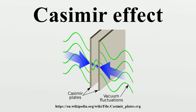In fact, Casimir's original goal was to compute the van der Waals force between polarizable molecules of the conductive plates, and thus it can be interpreted without any reference to the zero-point energy of quantum fields. Dutch physicists Hendrik Casimir and Dirk Polder at Philips Research Labs proposed the existence of a force between two polarizable atoms and between such an atom and a conducting plate in 1947, and after a conversation with Niels Bohr, who suggested it had something to do with zero-point energy, Casimir alone formulated the theory predicting a force between neutral conducting plates in 1948.